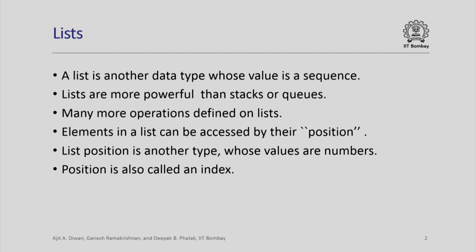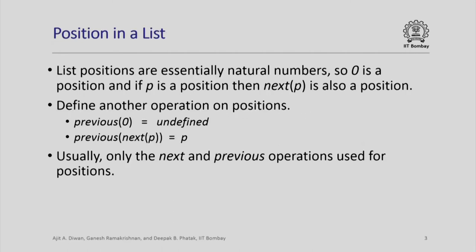Position is another type whose value you can think of as just a number, or sometimes we also call it an index in an array. List operations use positions in the list as parameters, and we will see that we can define many more operations on lists compared to stacks or queues.